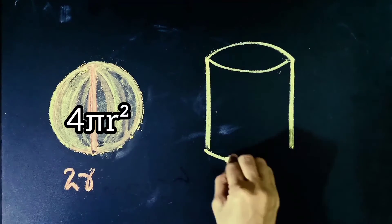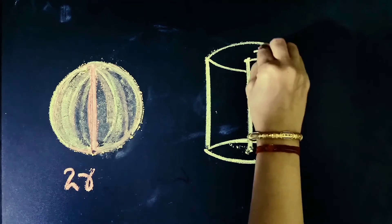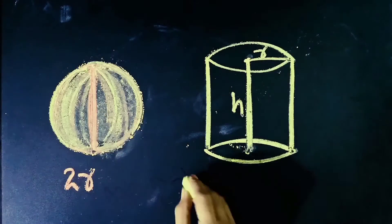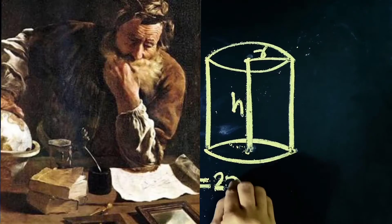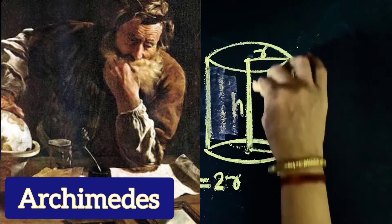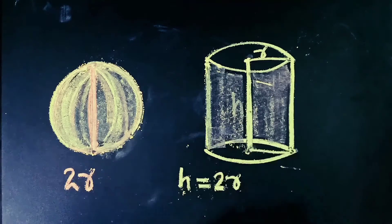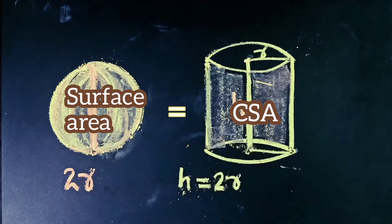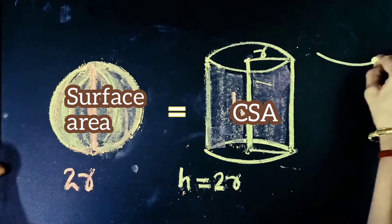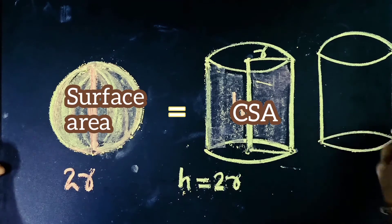The surface area of a sphere can be derived by many advanced methods including calculus, but here I am going to tell you the easiest one. A Greek mathematician and father of mathematics, Archimedes, discovered that the curved surface area of a cylinder is equal to the surface area of a sphere.